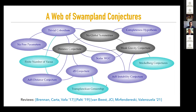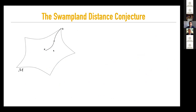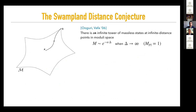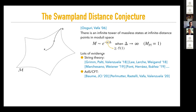Today we are going to focus on the distance conjecture. It is about the moduli space of the theory, and it tells us that whenever you go to infinite distance in this moduli space, you will always find an infinite tower of states becoming massless exponentially with the distance. We take Planck units. We also expect this alpha to always be bigger than at least some order-one factor. We believe this mainly because of the lot of evidence from string theory, and also recently there has been some evidence in the context of AdS/CFT.